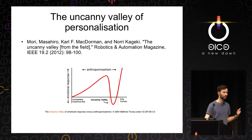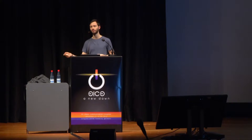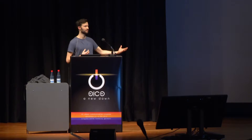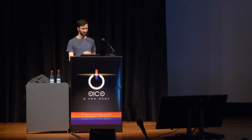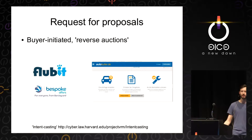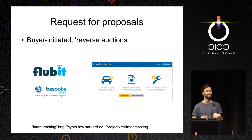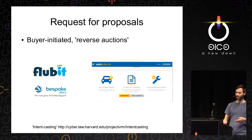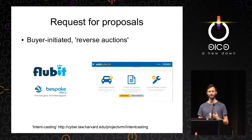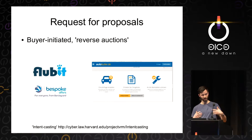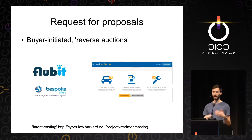So what's the solution? I think there are better ways to match people who have needs and wants with products and services that could fulfill them. The first idea is inspired by how large organizations buy stuff. They don't sit around waiting for targeted ads — they have procurement teams that send out requests for proposals, specifying exactly what they want, with internal policies and even ethical criteria. Suppliers then compete for that tender in a reverse auction, competing to provide the service at a good price. This kind of infrastructure could work for individuals as well.